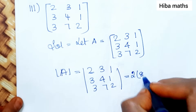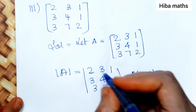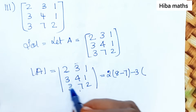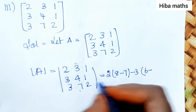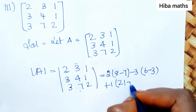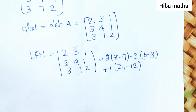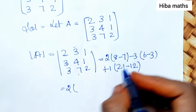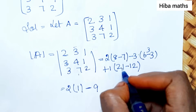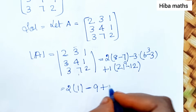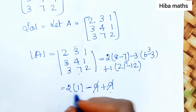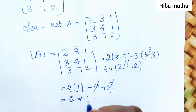Expanding: 2 into (4 times 2 minus 7 times 1) = 2 into (8 minus 7) = 2 into 1. Minus 3 into (3 times 2 minus 3 times 1) = minus 3 into (6 minus 3) = minus 3 times 3 = minus 9. Plus 1 into (3 times 7 minus 3 times 4) = plus 1 into (21 minus 12) = plus 9. So 2 minus 9 plus 9 cancel, giving modulus equals 2. That is not equal to 0, therefore A inverse exists.